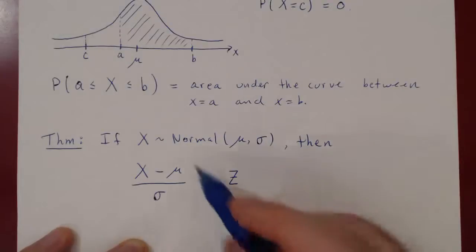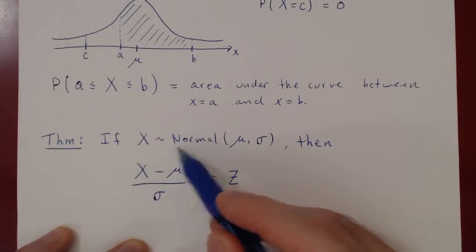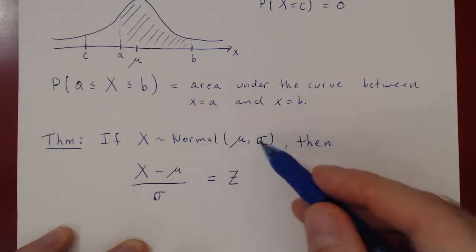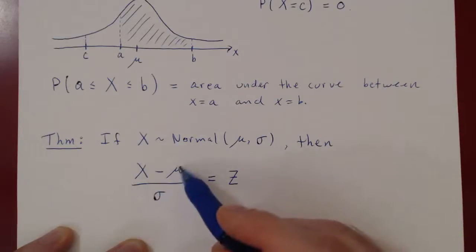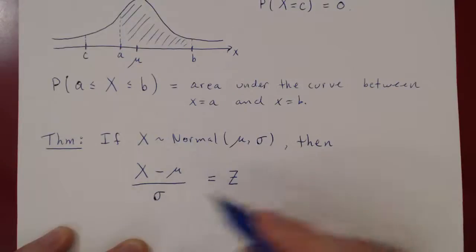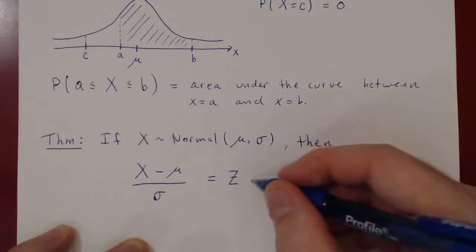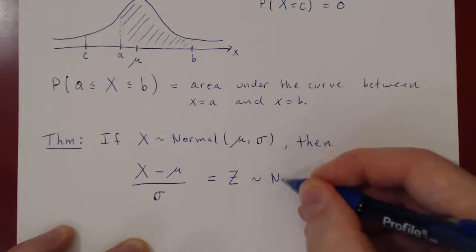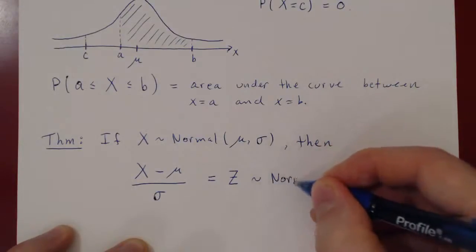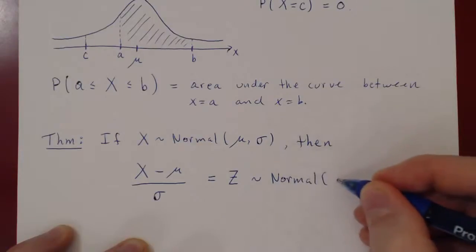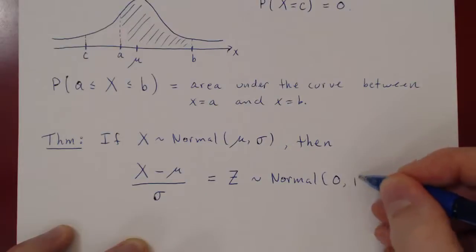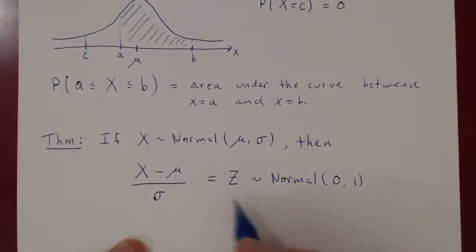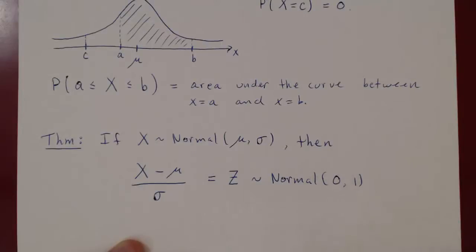The nice thing is, if you take any random variable that is normal with any given mean and any given deviation, and you subtract the mean and divide by the standard deviation, you will always get a normal random variable with a mean equal to 0 and a deviation equal to 1. This has a special name: it is called the standard normal random variable.